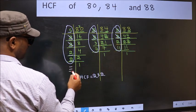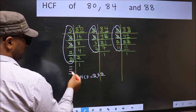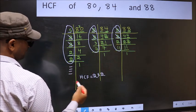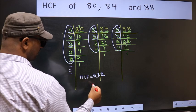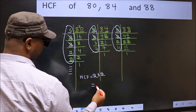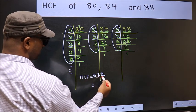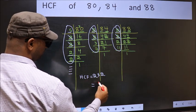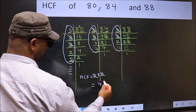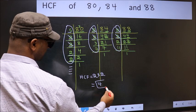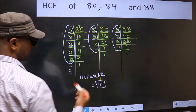No more numbers have been left out. Therefore our HCF is 2 into 2, which equals 4. 4 is our HCF.